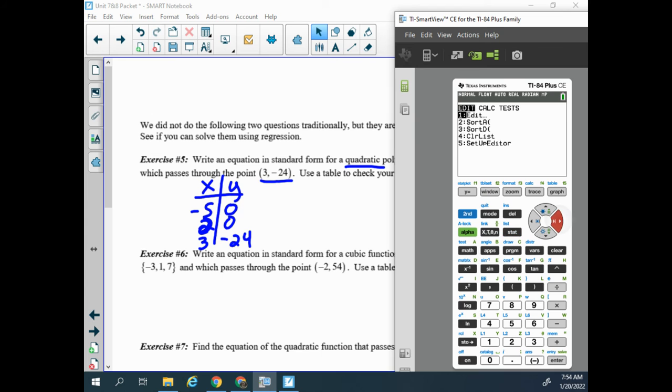Any regression on delta math is possible except for the cubic, which is our next problem, but most of them you can do. So stat calc and then the quadratic regression is number 5. So I see my ax squared plus bx plus c, negative 3, negative 9, 30.